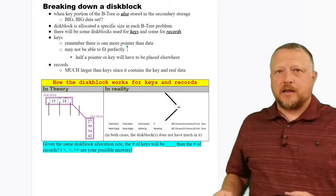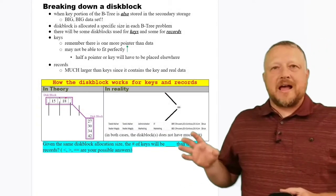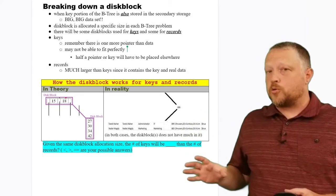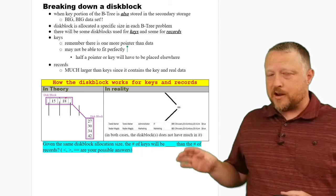So, it is a disk block. Think of it as a portion of the B-tree that is also stored on secondary storage.